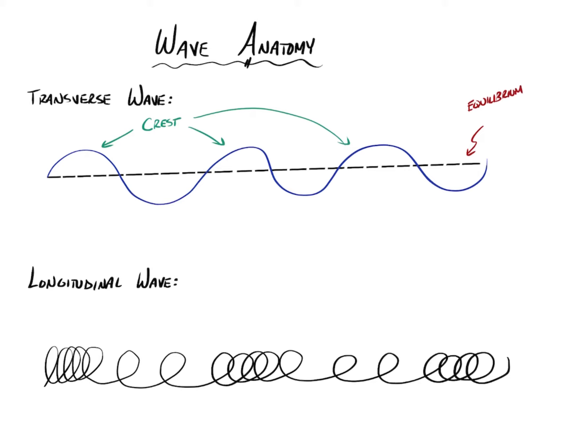So anything that's above, the highest points above that equilibrium point are called crests, the maximum point. So anytime you see or hear the word crest, that just means the maximum height that this wave reaches above the equilibrium point. The lowest point is called the trough, and that would be the maximum lowest location. So again, just terminology we have to memorize.